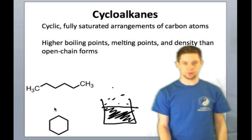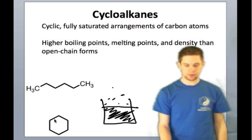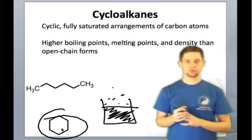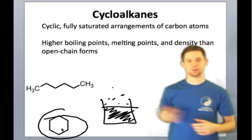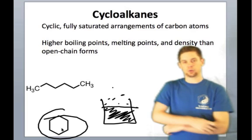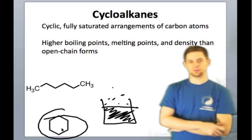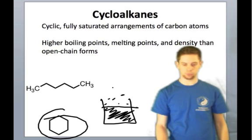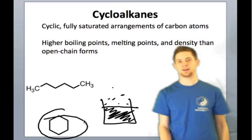The difference stems from their different molecular shapes. Cyclohexane, being bound up in this cyclic form, has a lot more surface area to present to other cyclohexane molecules around it. That leads to an increase in what are called London dispersion forces. If you've taken general chemistry, you've probably heard this term before.